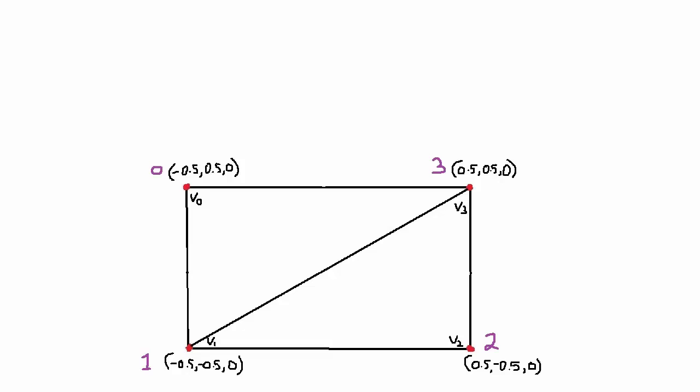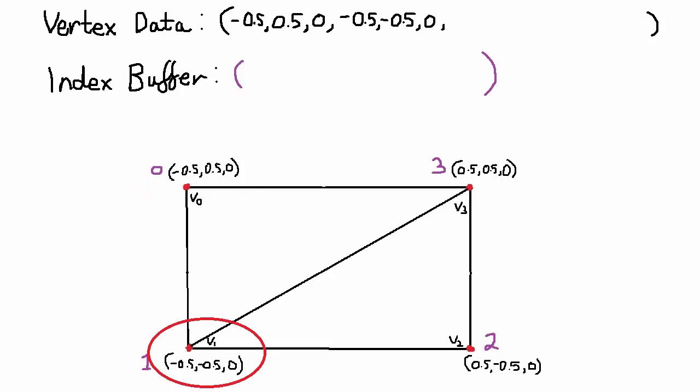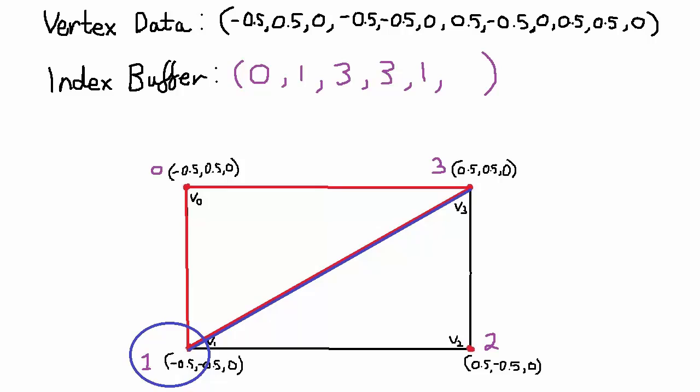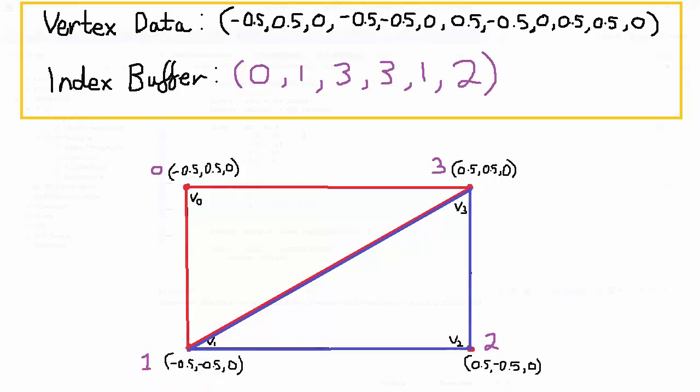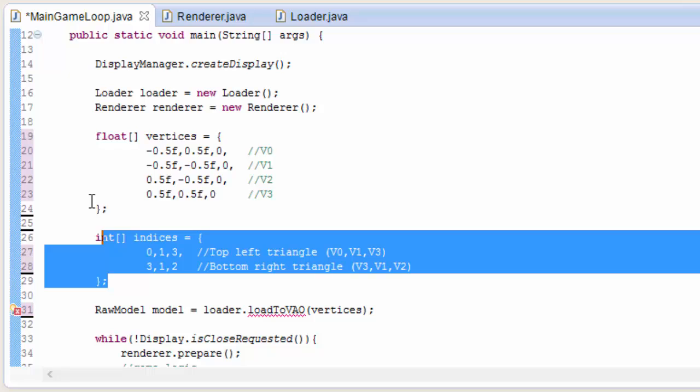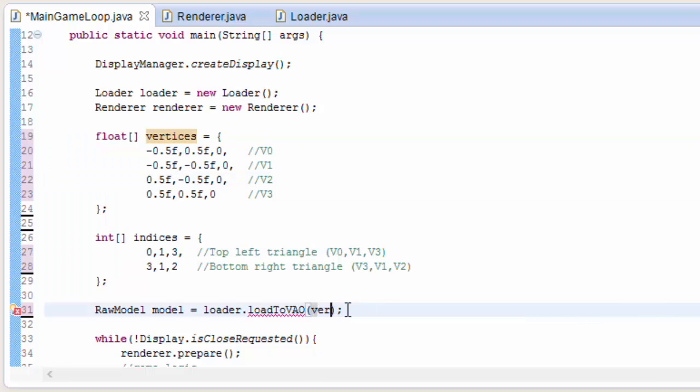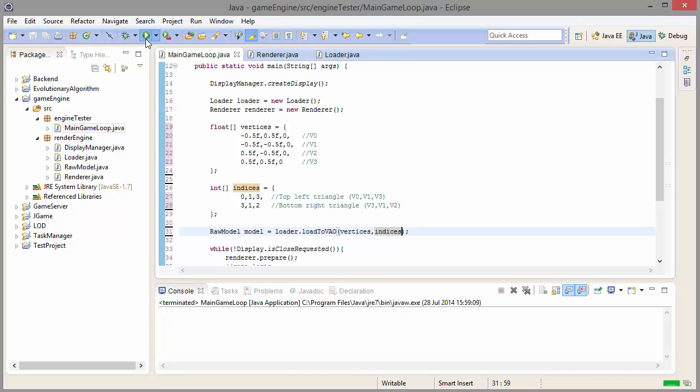So the final thing that we need to do to get all of this to work is to actually specify the model data that we want to load up and render. As you know, we now need two sets of data to represent our quad. Firstly, we need a list of the data of the four vertices in the quad, which is just the four positions of the vertices, and then we need the list of ints that will tell OpenGL the order in which these vertices need to be connected. So put this data into your main class like this, and make sure that your loadToVAO method now takes in both the vertex data and the index buffer data as well, and then you can go ahead and run the game.